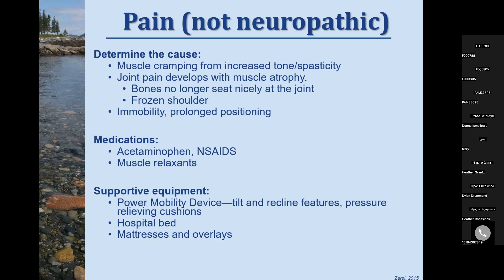For non-neuropathic somatic pain, we see muscle cramping with increased tone and spasticity, and joint pain including frozen shoulders. With ALS, muscle atrophy means joints aren't seating as they used to. We can generally use NSAIDs, and morphine and opiates are very appropriate as well. Muscle relaxants are another option, but use them cautiously — in patients with Parkinson's disease, too much muscle relaxant may reduce the tone they need to ambulate. Supportive equipment like power wheelchairs, hospital beds, and mattress overlays can also be very helpful.